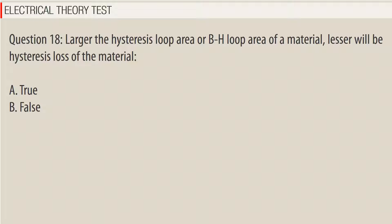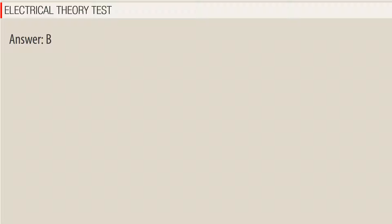Question 18. Larger the hysteresis loop area (BH loop area) of a material, lesser will be the hysteresis loss of the material. a. True. b. False. Answer: B.